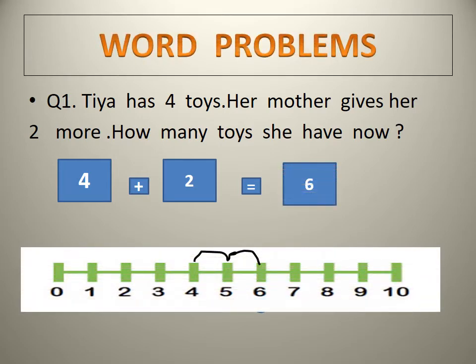Question number 1. Tia has 4 toys. Her mother gives her 2 more. How many toys does she have now? So Tia has 4, so number 4 will come here. Then plus. How many did mother give? 2. So now see the number line. 4 plus 2, it is 6. The answer is 6.